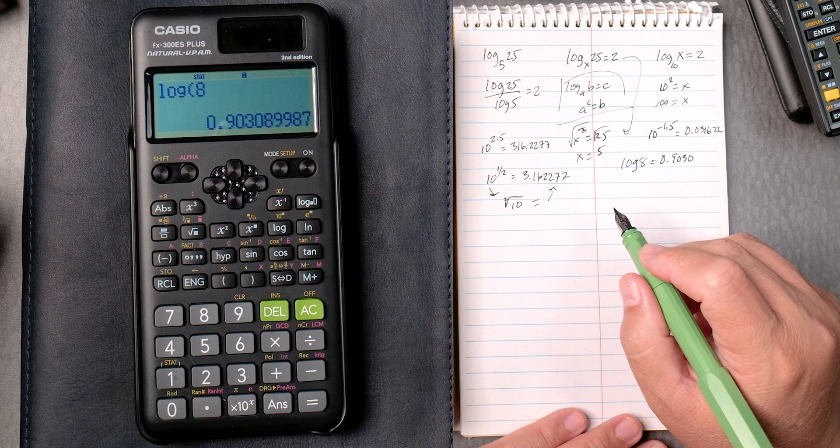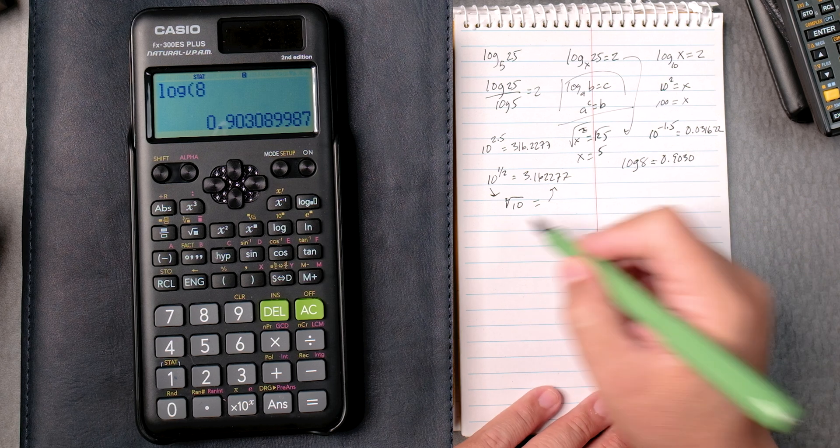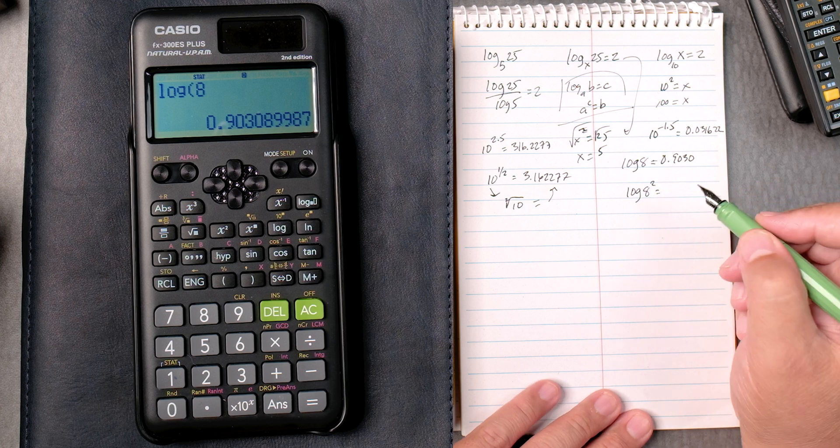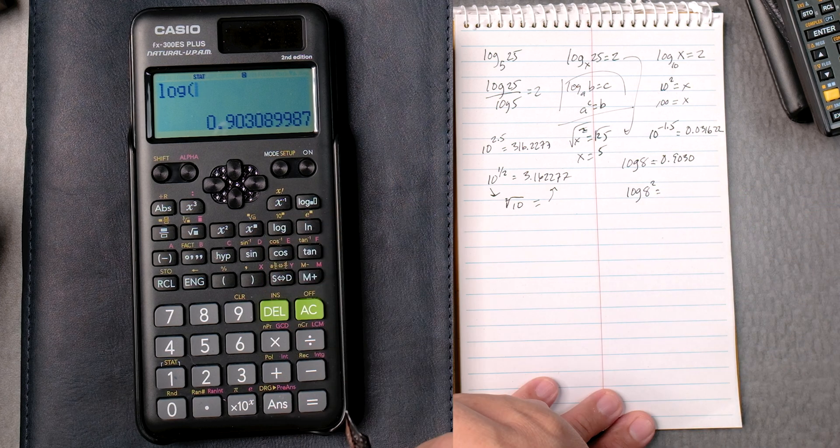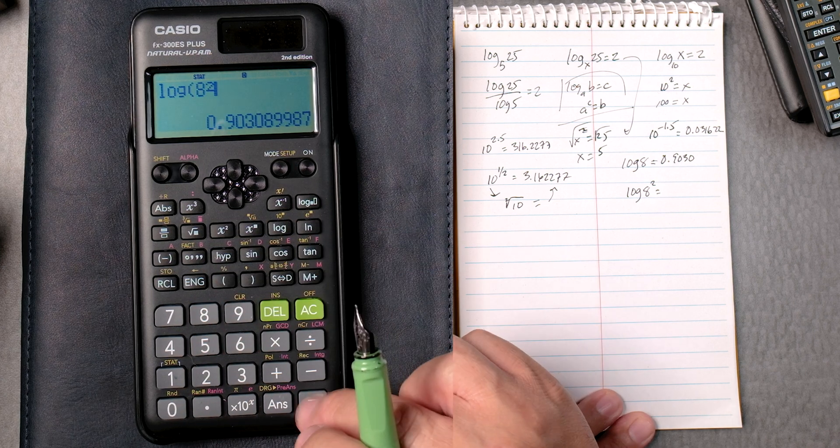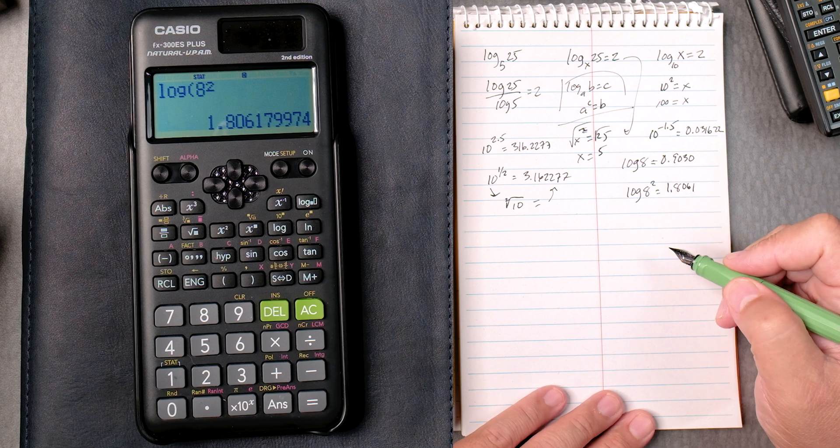So let's do something like the log of 8 squared. So we take the log. We get 8. We square it. We press equals 1.8061.